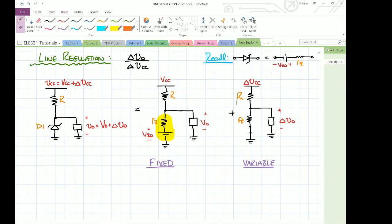Before we jump into that, if you notice at the top, we've given a definition. The line regulation is defined as delta VO over delta VCC. Again, the change in output with respect to some change in input. As I mentioned, the input is the supply or the line and the output is the voltage that the load sees.